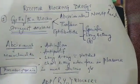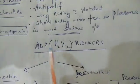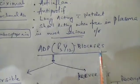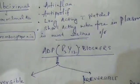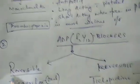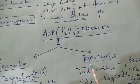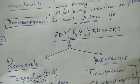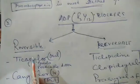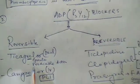Now we will discuss the ADP P2Y12 receptor blockers. In this group, there are two drugs - one are the reversible that reversibly block this receptor, and another is irreversible blocker. ADP, by blocking the ADP receptors, prevents platelet aggregation, and that's where they exert the antiplatelet action. Reversible blockers for ADP receptors - we have two drugs, one is ticagrelor. You can remember it is reversible as 'R' comes in these drugs.